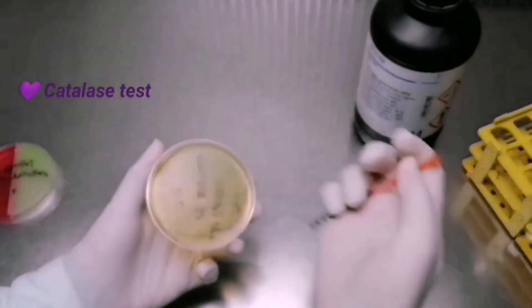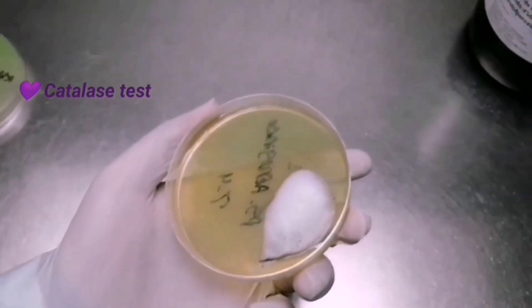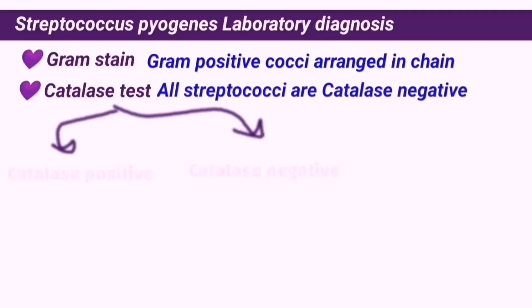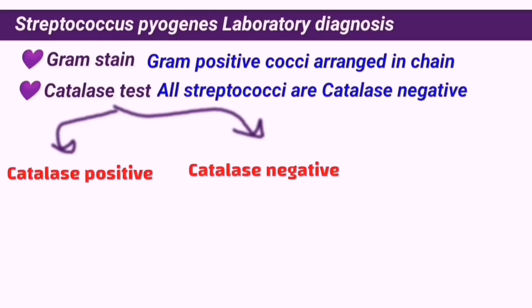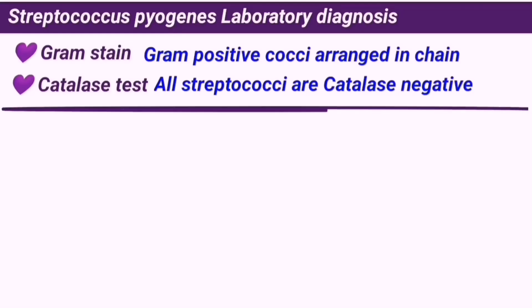After the gram stain is done, we can perform a catalase test to confirm that this organism is streptococci. The catalase test can differentiate between staphylococci, which are all catalase positive, and streptococci, which are all catalase negative. The gram stain and catalase test together confirm that the bacteria is streptococci without specifying the species.